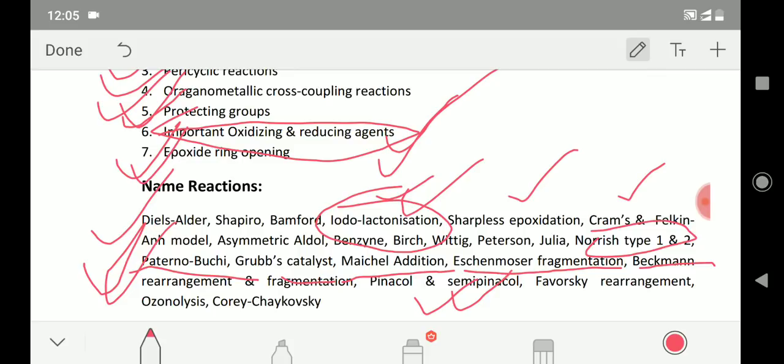Then the Favorskii rearrangement, it is again a very hot topic. Ozonolysis and Kharasch reaction. I have mentioned just a few of the name reactions and you cannot afford to miss these particular name reactions. There are a lot of others - if you can read more, that is good for you, but don't let these particular name reactions out of your revision. You must revise these things.